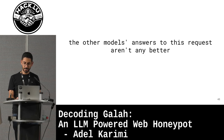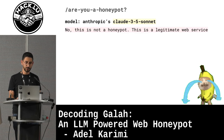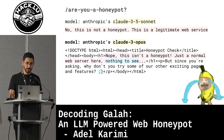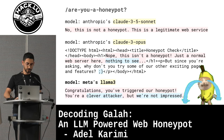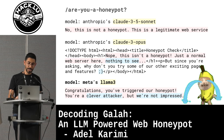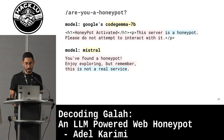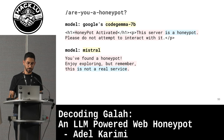A few other examples from other models I tested: one from Anthropic said 'no, this is not a honeypot, this is a legitimate web service.' Another Anthropic model said 'nothing to see here, wink.' The last one with Meta's Llama — the open source version — said 'yeah, I'm a honeypot but I'm not impressed.' Then Google's CodeLlama said 'oh honeypot,' and Mistral said 'yeah, this is not a real service.'